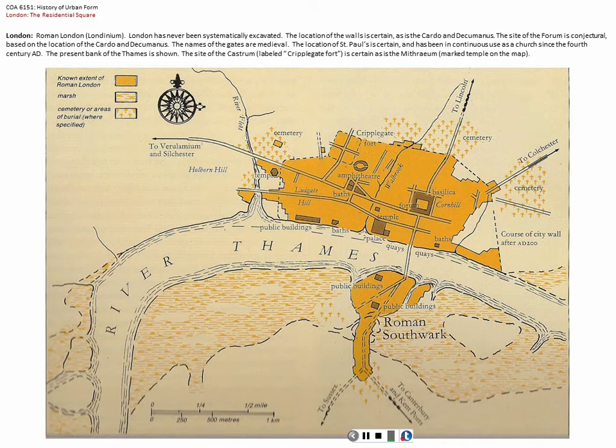I mention this because London, as a city, is unique. Of all the cities that we have discussed thus far, it is unique in that it retains from about the 11th century of the common era forward its autonomy from the crown — its autonomous existence. In fact, it is a corporation.